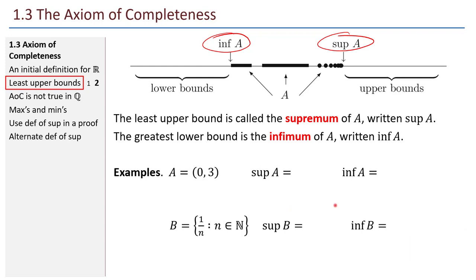For set A, the supremum is 3 and the infimum is 0. Notice that 3 and 0 are not elements of set A, but that's perfectly fine. For set B, the supremum is 1. So 1 is an upper bound for everything in B, and in fact it's the least of the upper bounds. I know it's the least because 1 is actually an element of B — since I found an upper bound that's in the set, that has to be the least upper bound. If I went any less than 1, I'd have the element 1 in B that was bigger. The infimum of B is 0, and 0 is not in set B.